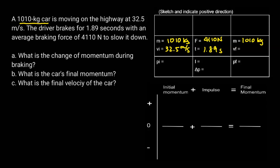We don't know the final velocity. I will make the right positive and do a quick sketch. I'll draw a little box and indicate the initial velocity going to the right. It is slowing down, so I know it's still going to the right.